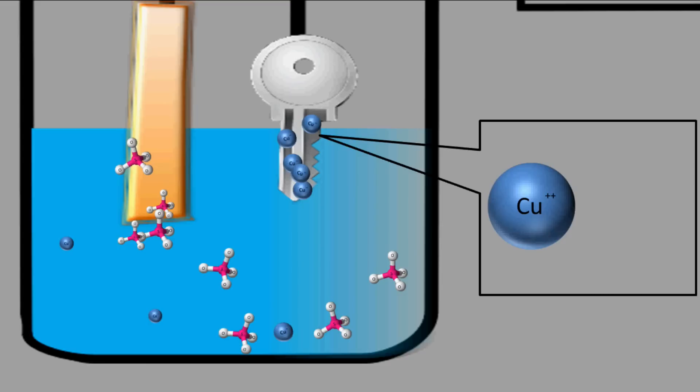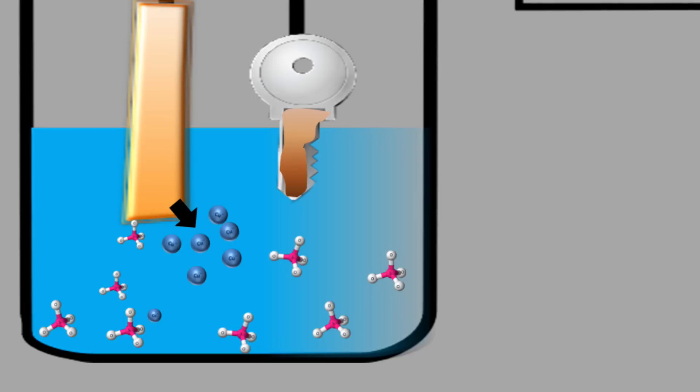Then copper ions receive electrons from there and it turns into neutral copper atoms. Thus copper is deposited on the key.